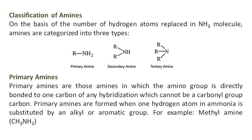Primary amines are those amines in which the amino group is directly bonded to one carbon of any hybridization, which cannot be a carbonyl group carbon. Primary amines are formed when one hydrogen atom in ammonia is substituted by an alkyl or aromatic group. For example, methylamine, CH3NH2.